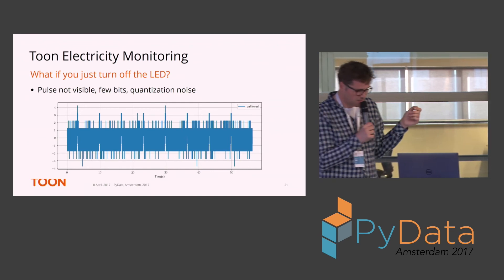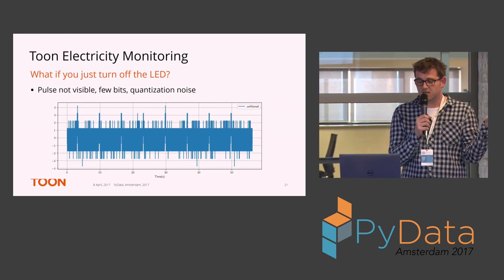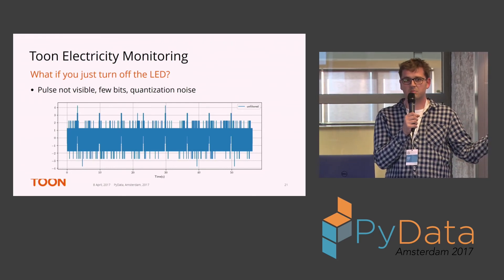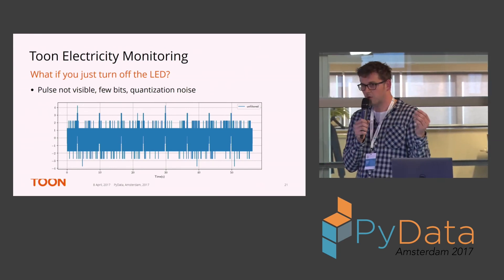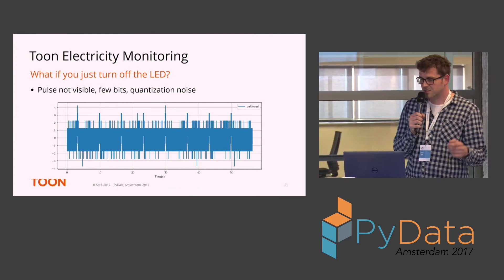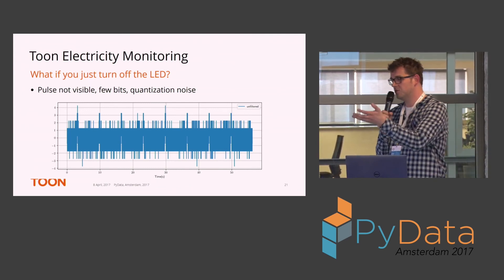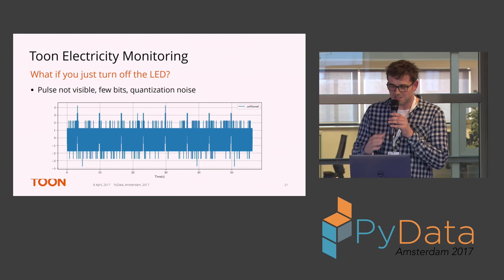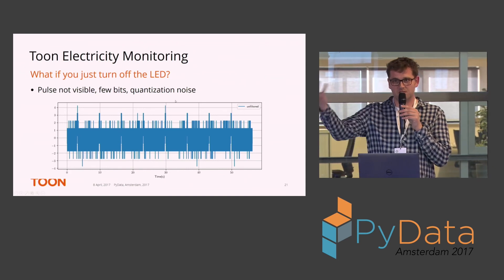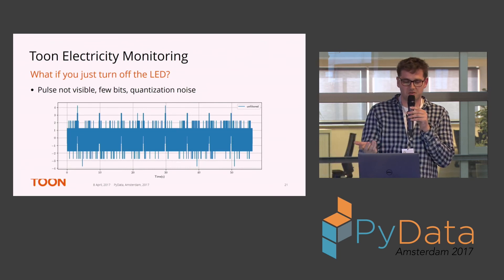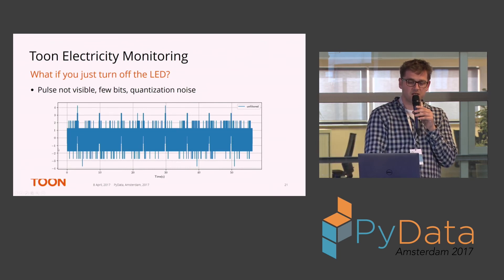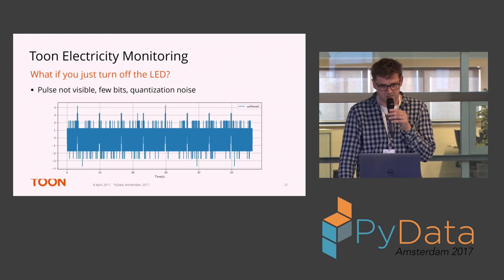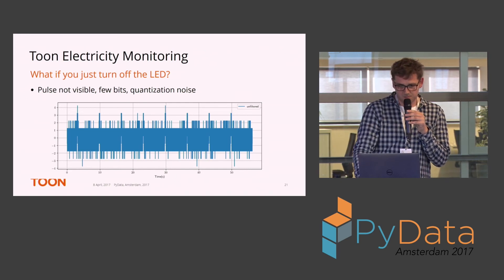We have a student working on this, and the challenge is that in some countries the electricity meter is outside with no power socket, so we need to reduce the LED power as much as possible. The student said he could reduce the LED power — and he just turned it off. So this is the signal you end up with depending only on ambient light. It looks very noisy; in fact the sensor only has a dynamic resolution of three bits because it's hardly sensitive to this particular signal.